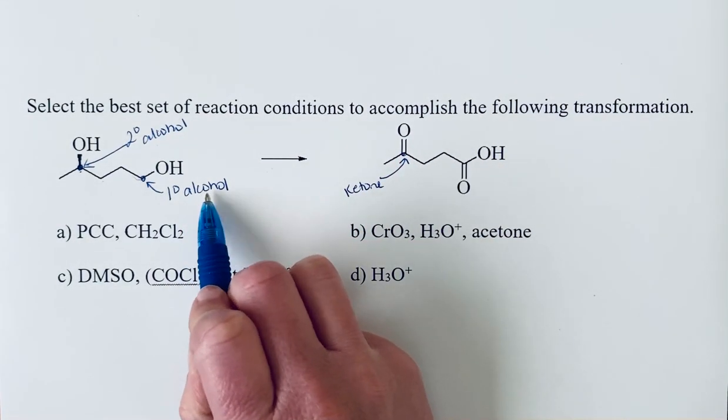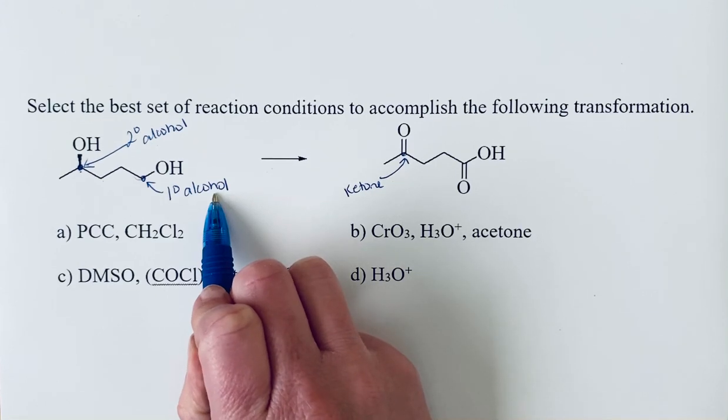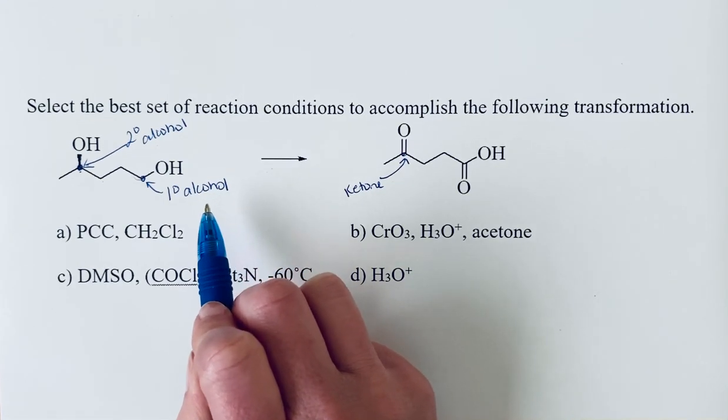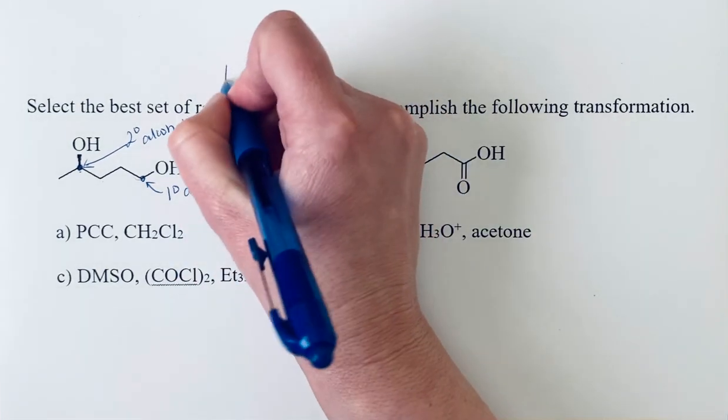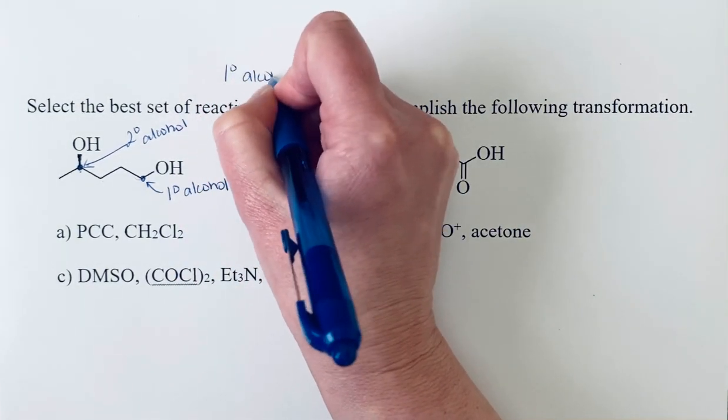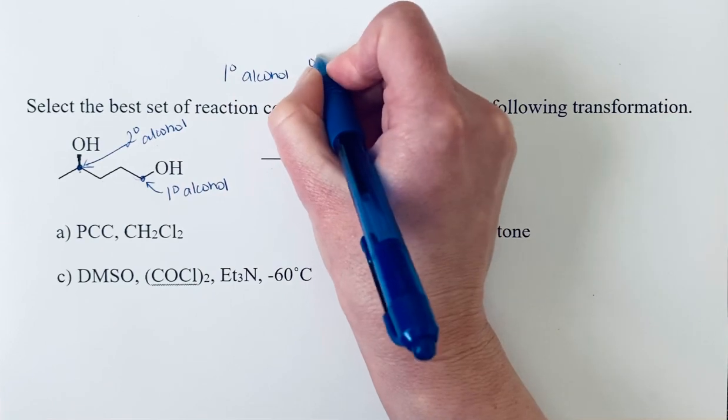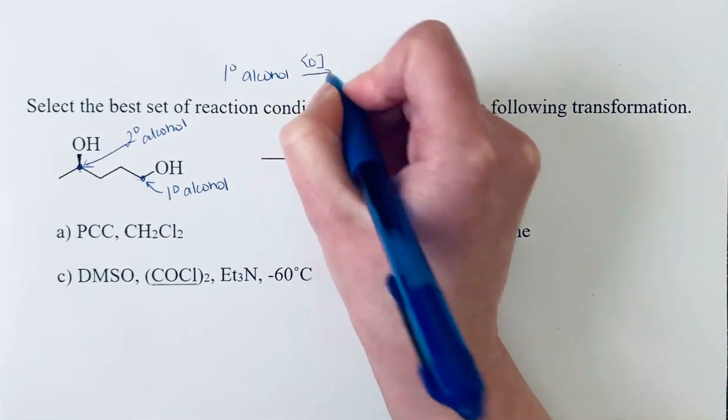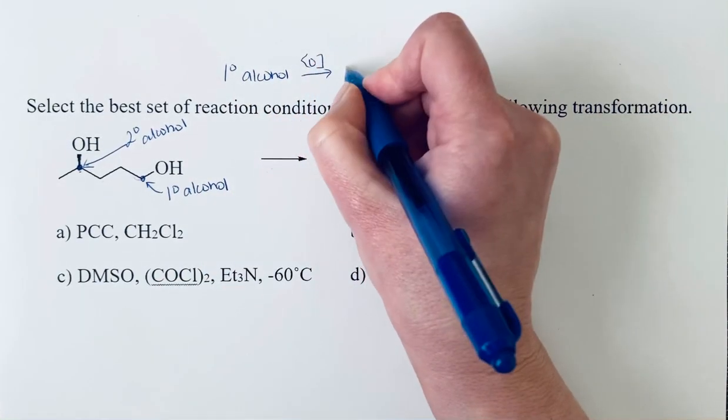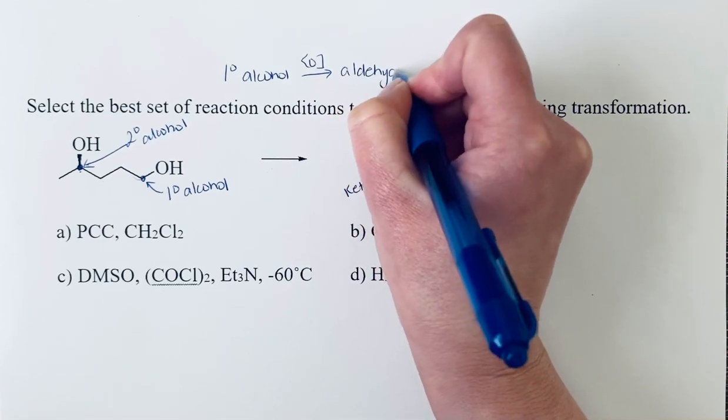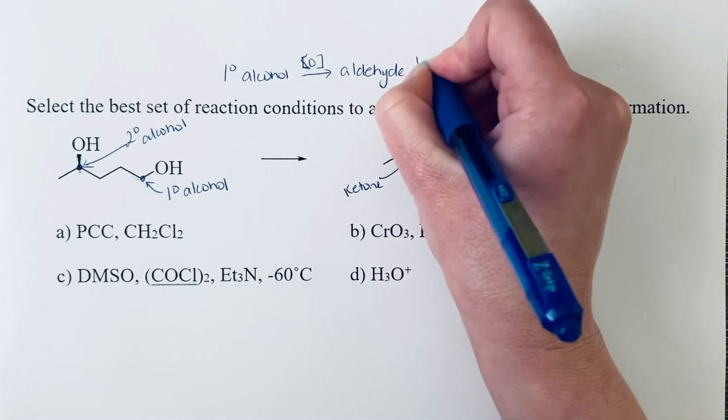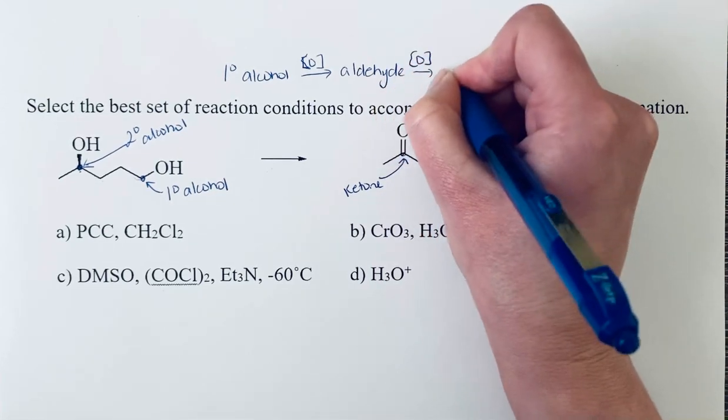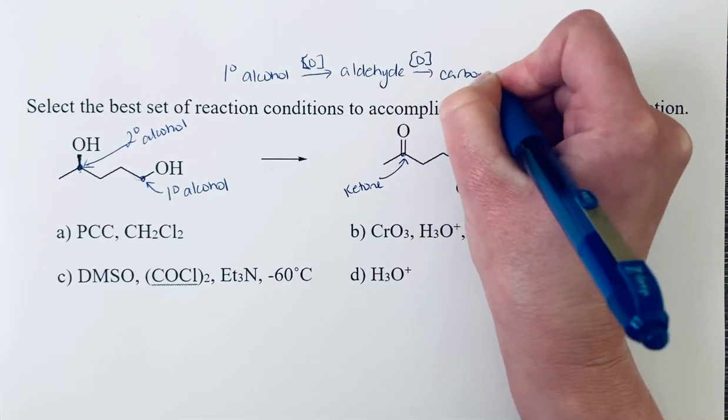Primary alcohols are what we really need to pay attention to in terms of selecting the oxidizing agent that we want to use. A primary alcohol can be oxidized essentially up one level to give you an aldehyde, and it could be oxidized even further to give you a carboxylic acid.